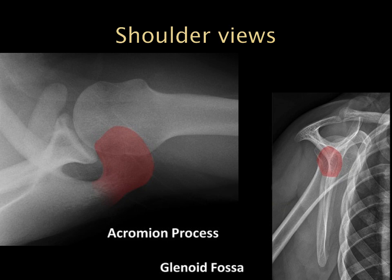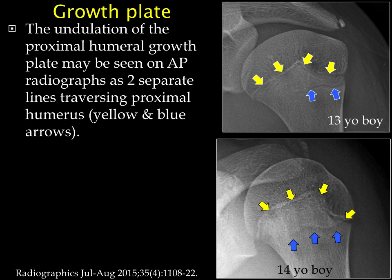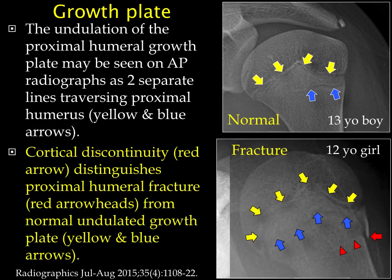Let's talk about some normal variants. We have our growth plate of the proximal humerus, and because this is a three-dimensional structure, the x-ray beam might actually intersect the growth plate in two positions. We do not want to mistake that for a proximal humeral fracture — the growth plate is normal. Separately, a fracture will show cortical discontinuity, and that is separate from the growth plate.